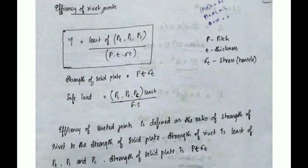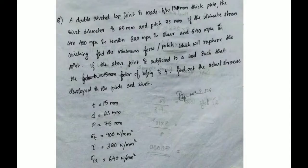Now let's take a look at the first problem. Here, the plate thickness T is 15 mm, rivet diameter d is 25 mm, and pitch P is 75 mm. The ultimate stresses are: σt = 400 MPa in tension, τ = 320 MPa in shear, and σcr = 640 MPa in crushing.